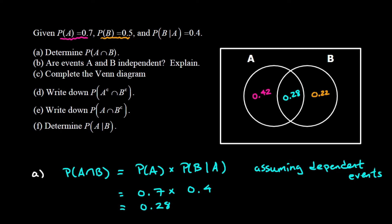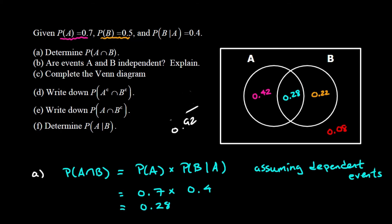There's still a fourth region in our Venn diagram — outside both circles — which might be zero but we have to check. Adding the three known values: P(A) is 0.70 and the B-only region is 0.22, giving 0.92 total. We've only accounted for 92 percent of our sample space, so outside both circles we have 0.08, representing the probability of neither event A nor event B occurring.